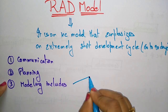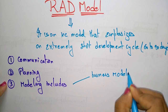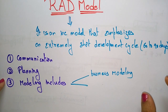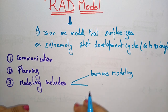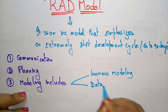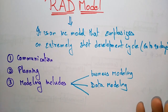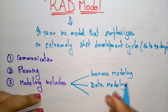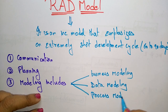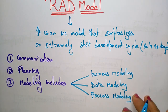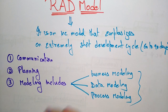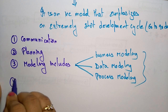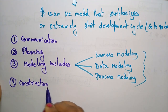After planning, the developer tries to model the project. In the RAD model, modeling includes business modeling, data modeling, and process modeling. Based on the usage of the customer and the developer's understanding, different types of modeling can be introduced. Business modeling and data modeling deal with the data objects to be used, and process modeling is where data objects are transformed to implement business functions. All three can be included together to implement the project.